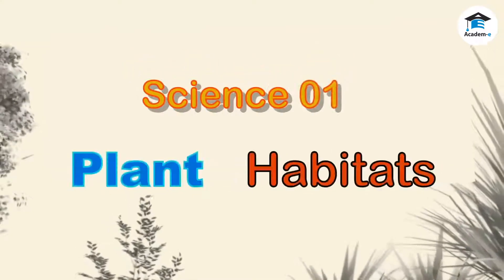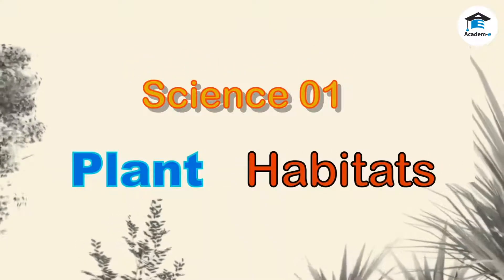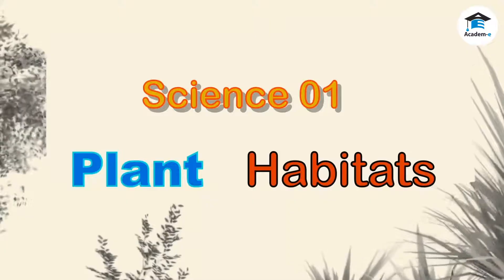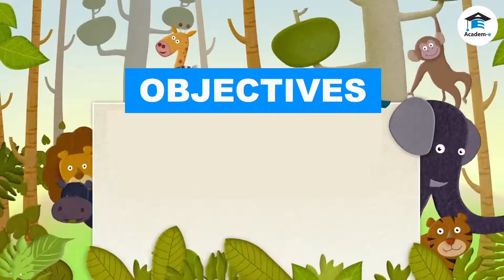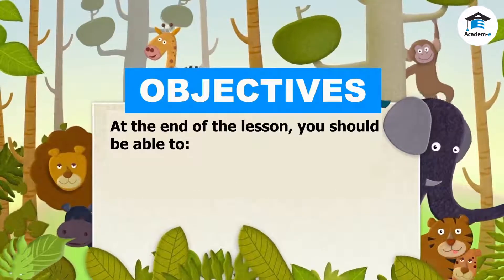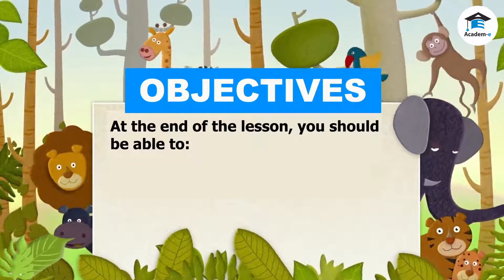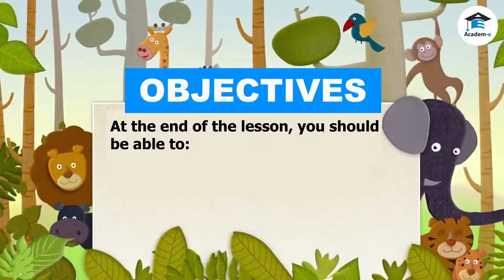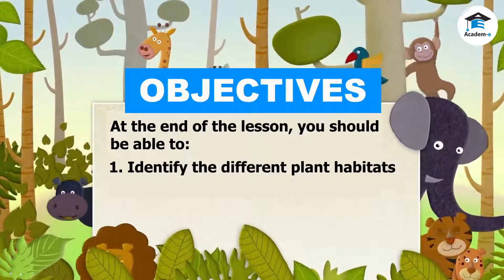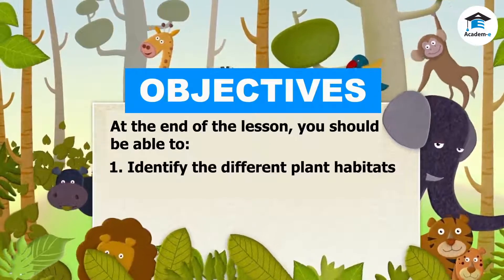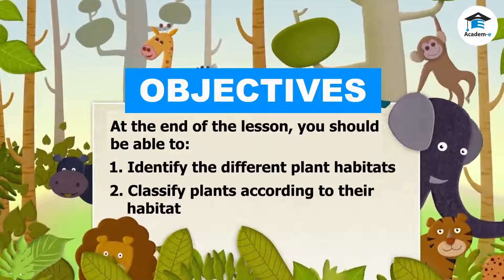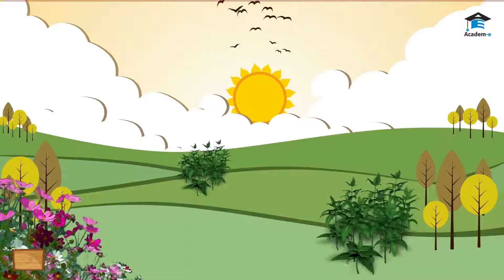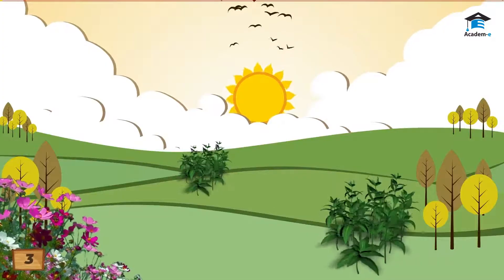Science One: Plant Habitats. Objectives: at the end of the lesson you should be able to identify the different plant habitats and classify plants according to their habitat. Plants grow in different places.